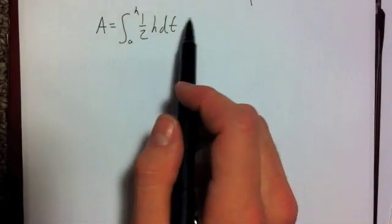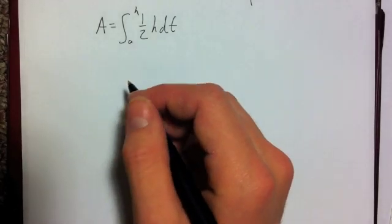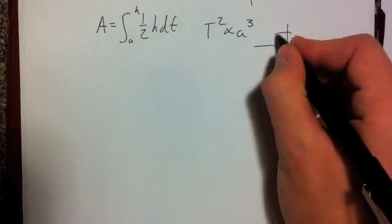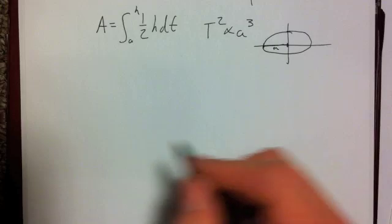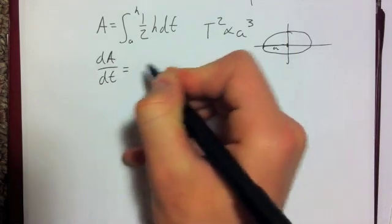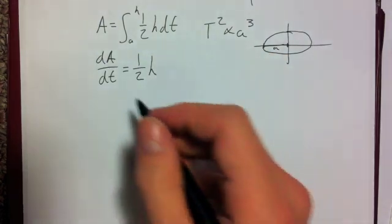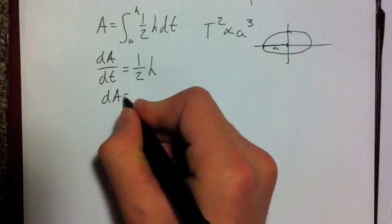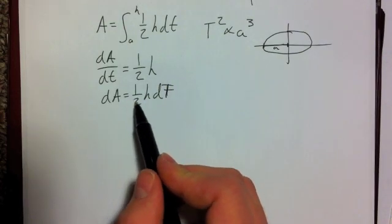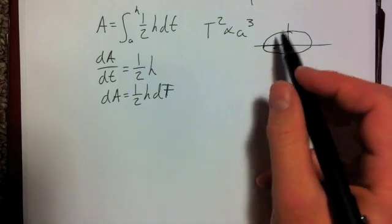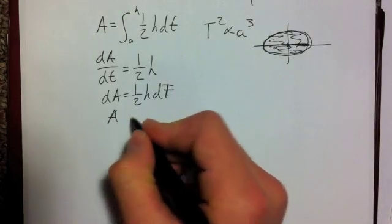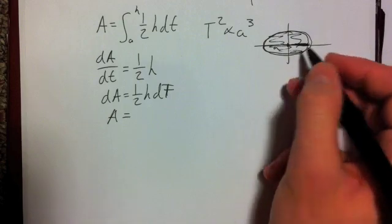Starting back at our area integral in terms of dt and h, we will demonstrate Kepler's third law, which states that the square of the period is proportional to the cube of the semi-major axis. To do this, we differentiate both sides, so dA/dt equals ½h. Rearranging, dA equals ½h dt. If we want the whole area of one revolution, we call that A, and the time for that to happen is one period T.